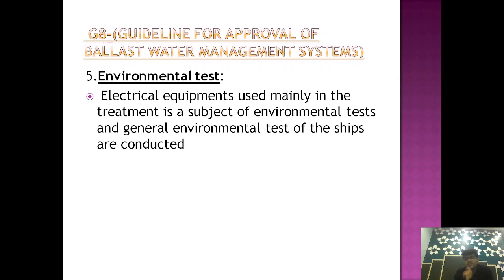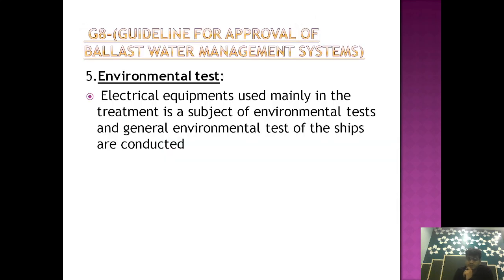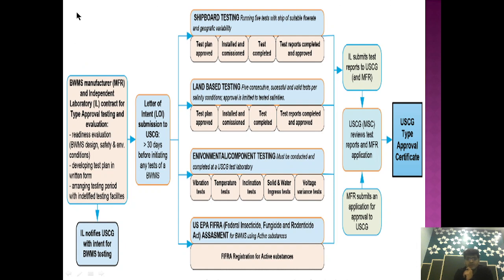The fifth part is the environmental test. In this testing, the equipment which has been constructed will be subjected to very harsh conditions. The shipping conditions in which the equipment must work include rolling, pitching, sea weather conditions, rough conditions, and manhandling. The equipment should be robustly designed to work in maximum extreme conditions. Analytical equipment used in the treatment is subjected to environmental testing to assess the chances of failure under these conditions.